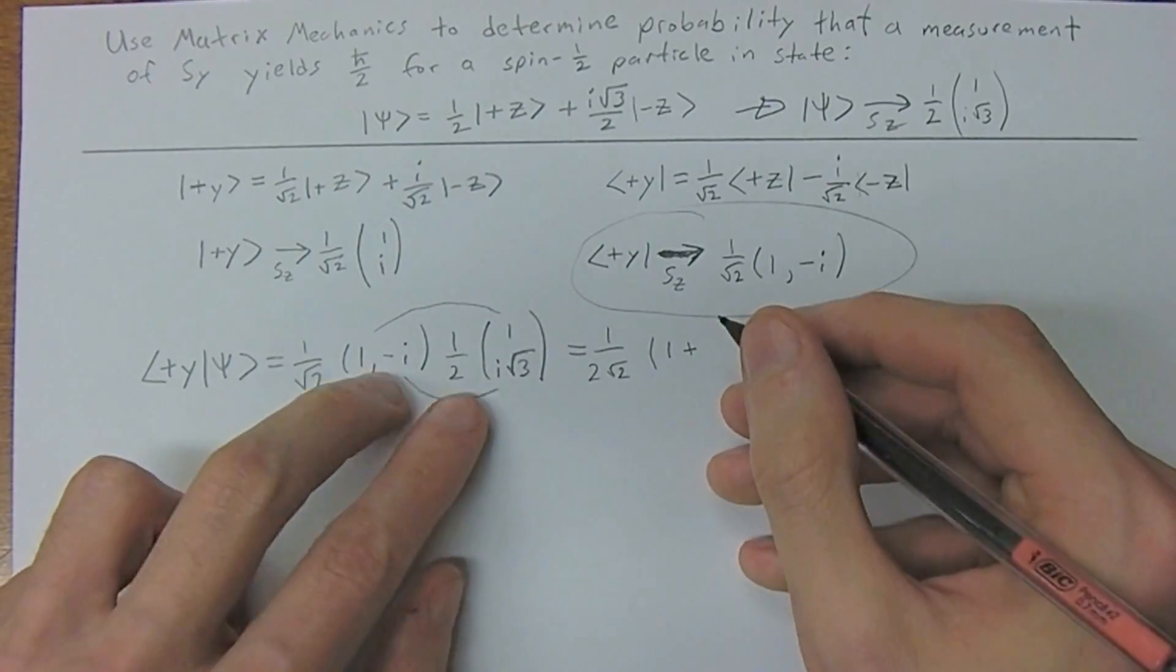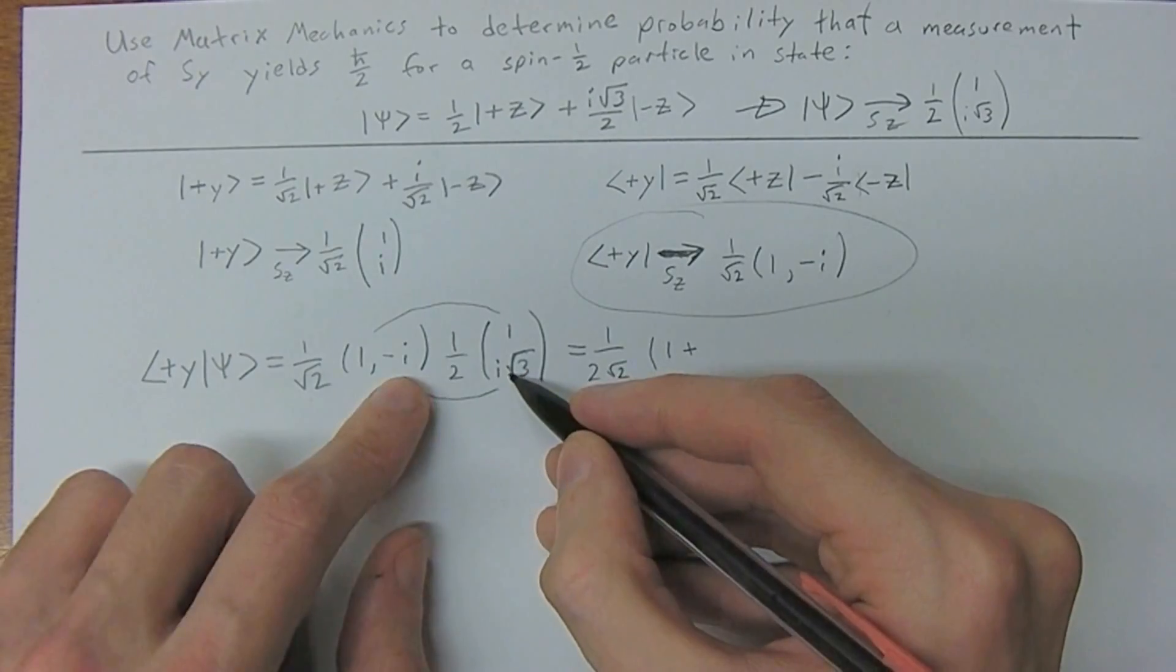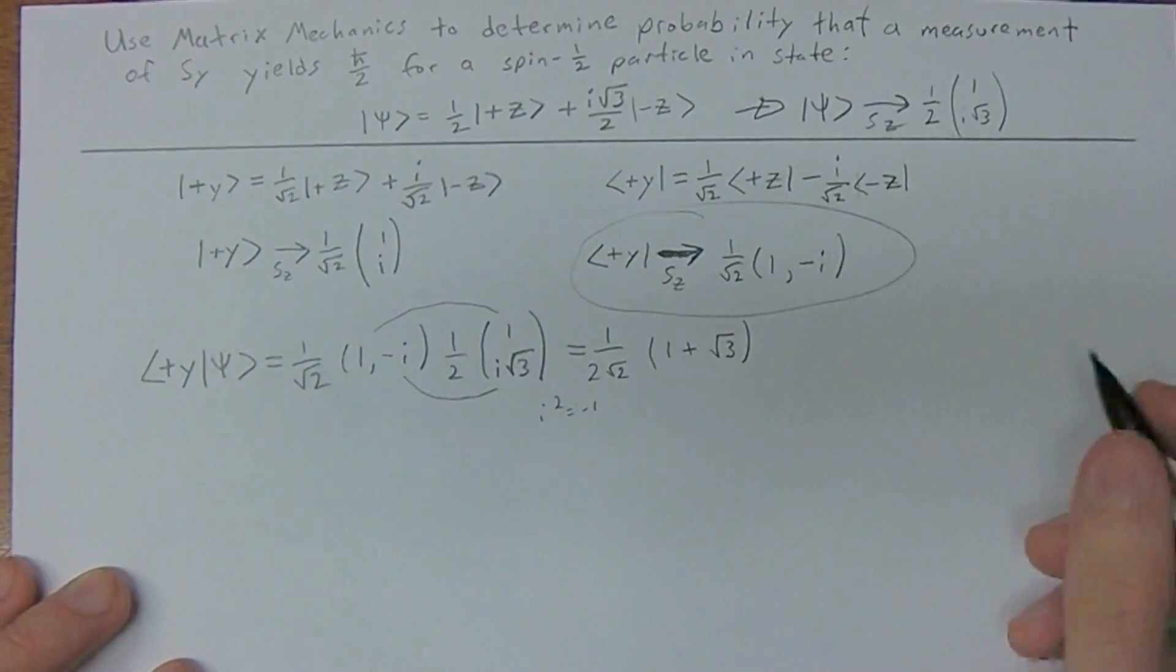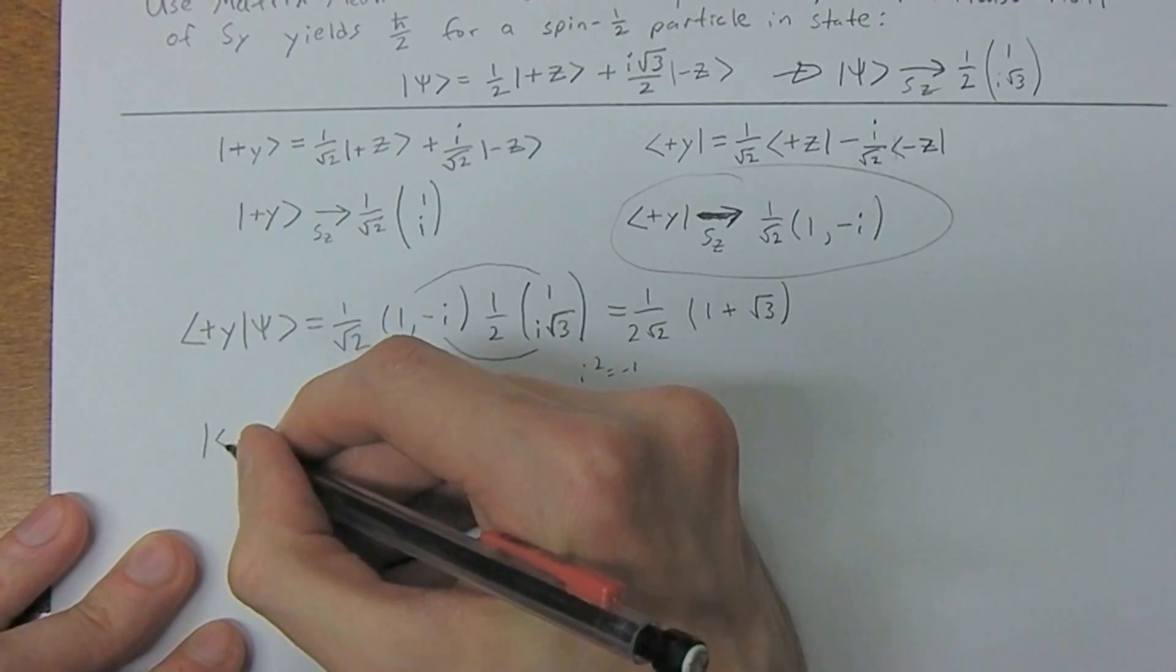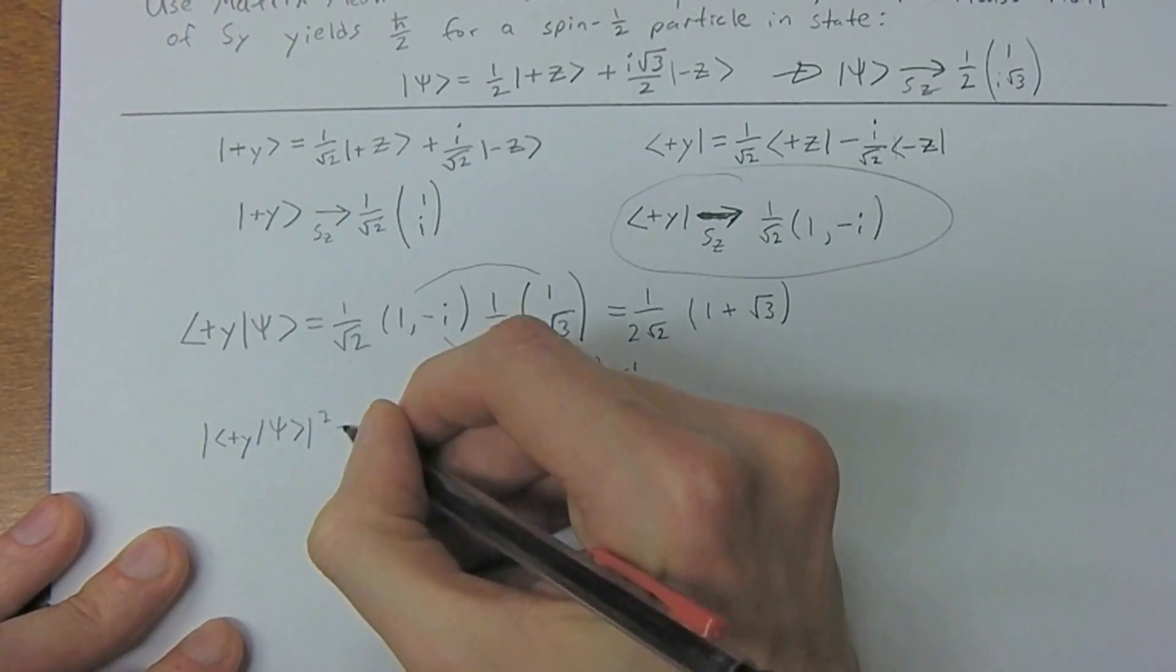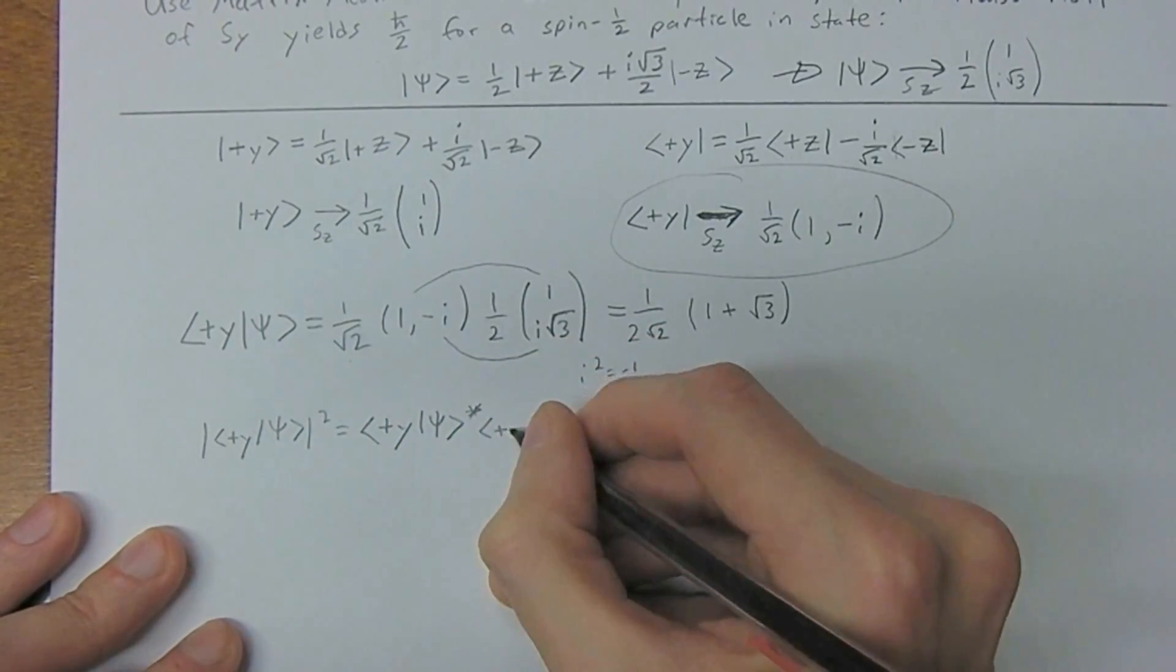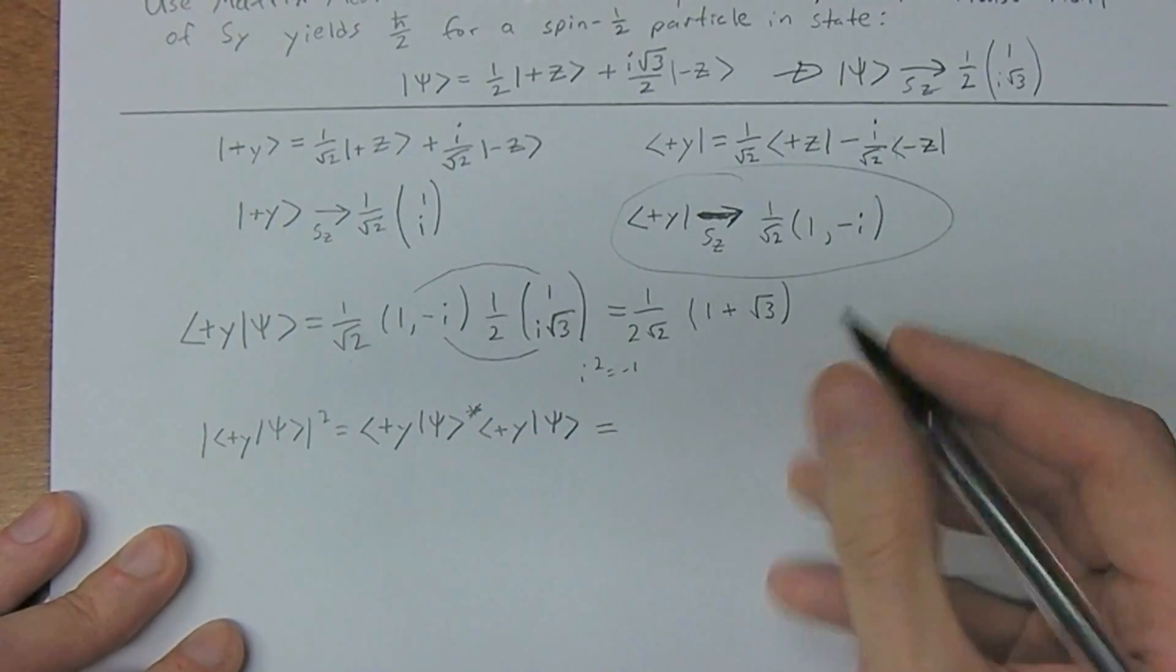So plus, i squared equals minus 1. So we're going to have a minus 1 times minus. That'll make the whole thing positive. We'll just have a square root of 3 here. Now, to get the probability, remember, we just multiply this by its complex conjugate. So plus y psi squared is the same as plus y psi complex conjugate times plus y psi.